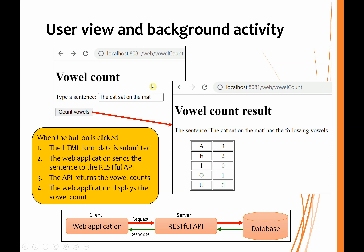When that submit button is clicked, the data in the HTML form is submitted to the web controller, which then formulates an HTTP request and sends that request to the RESTful API. The RESTful API takes that data and processes it using service classes. The service classes use repository classes to store or obtain data from the database. That database data is then formed into a data transfer object that is sent back to the web application. The web controller will then activate the next view and display that data from the DTO in some appropriate way.